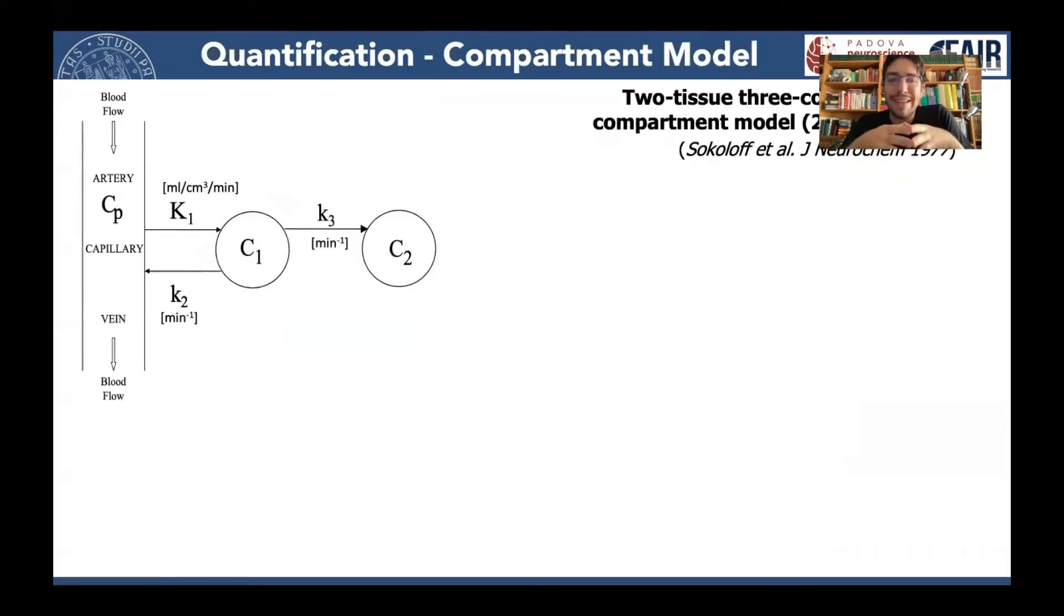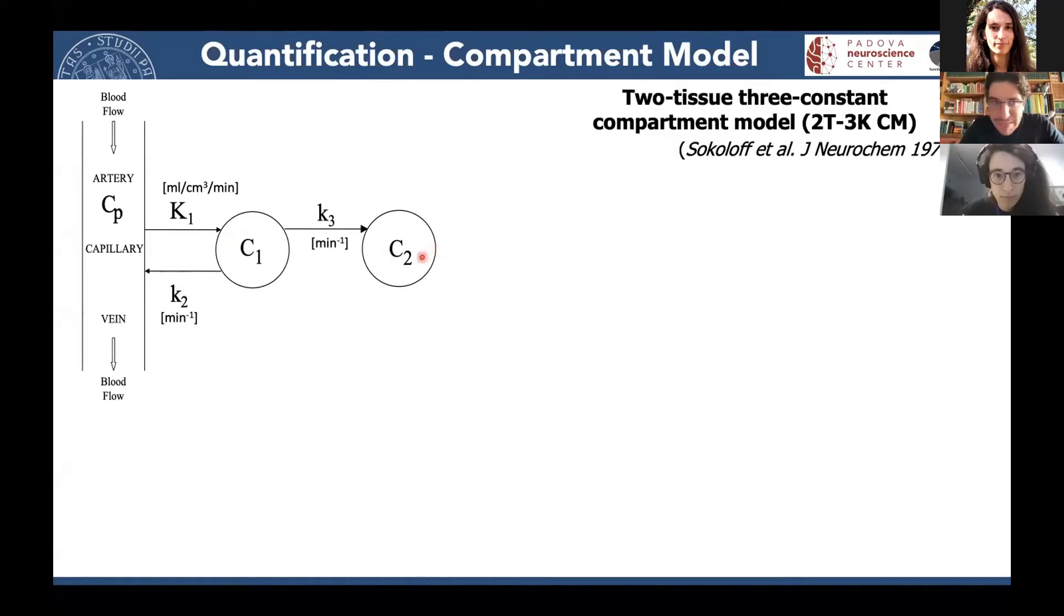Now, if we want to fully characterize what happens to FDG inside our brain, we need to resort to a mathematical instrument called a compartmental model. In particular, for what concerns FDG, we have a two-tissue compartmental model that has been described for the first time in the 1970s by Dr. Luis Sokoloff. And it has two tissue compartments and three rate constants.